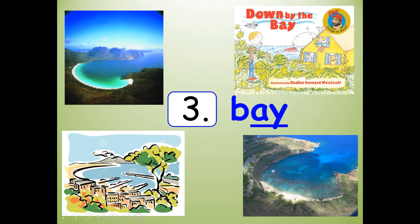Number three. Just like the Raffi song 'Down by the Bay' — these are all examples of bay. Stretch it — bay. Shrink it — bay. B-A-Y. Bay.